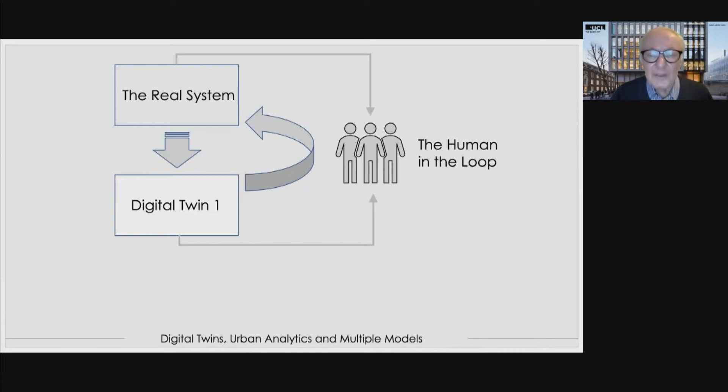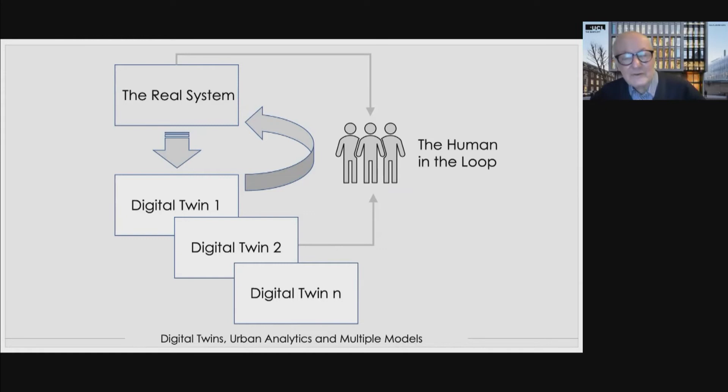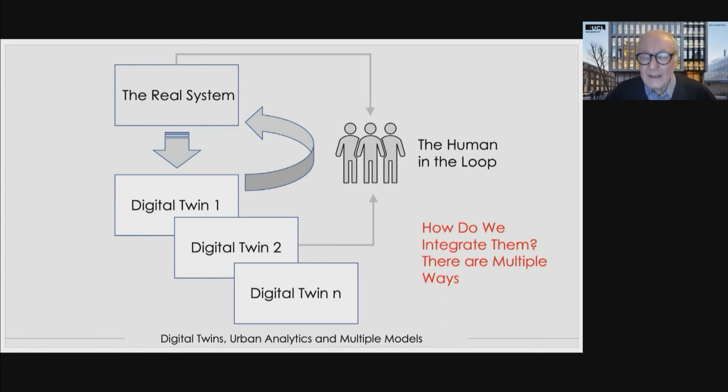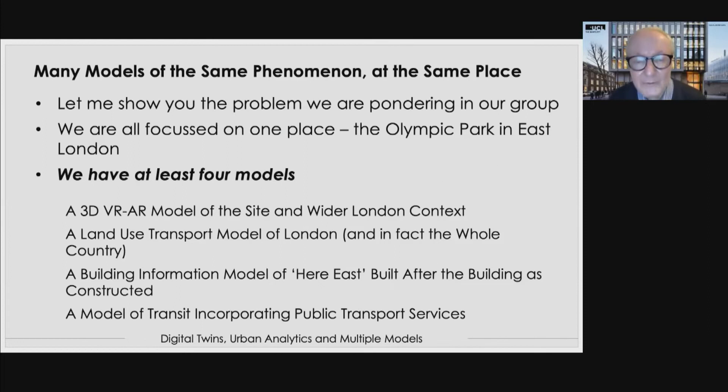Related to that is the notion that there may be more than one model — more than one twin — which begins to break apart the language of digital twins: digital triplets, quadruplets, and so on. The key question is always how we integrate them. There are always multiple models and multiple ways of integration. In our group at CASA, we're studying many models of the same phenomenon at the same place — we all focus on one place.